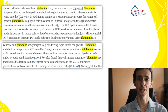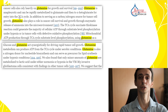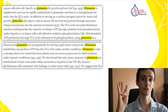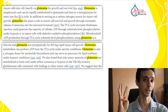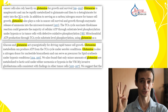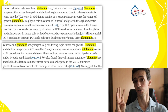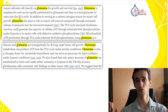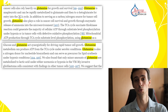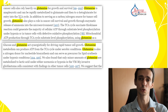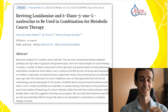Glutamine can be used for synthesis of new DNA, which is very much needed for any growing cells. The tumor is a very rapidly growing cell — to divide and grow, it needs more DNA. And also, glutamine can be used for energy production and tumor survival.